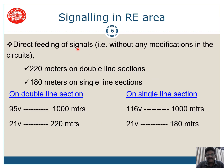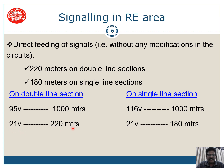Based on direct feeding of signals without any modifications in the circuit, it is 220 meters on double line section and 180 meters on single line section. On double line, 95 volts is the induced voltage per kilometer and the voltage permitted on the primary side is 21 volts. So it is 220 meters only. Direct feeding of signals is permitted up to 220 meters. If any foreign feed is available, the bulb will not glow — that is the reason for this limit. Similarly on single line, it is 180 meters.